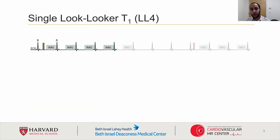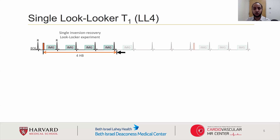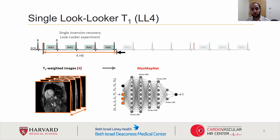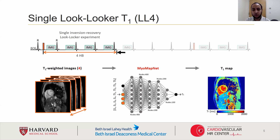The goal of MyoMapNet is to reduce the number of heartbeats necessary to produce the T1 map from 11 to just 4. The four T1-weighted images are then fed into a fully connected neural network, which estimates the T1 map pixel by pixel.